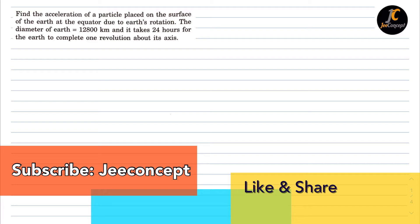The diameter of earth is 12800 km and it takes 24 hours for the earth to complete one revolution about its axis.